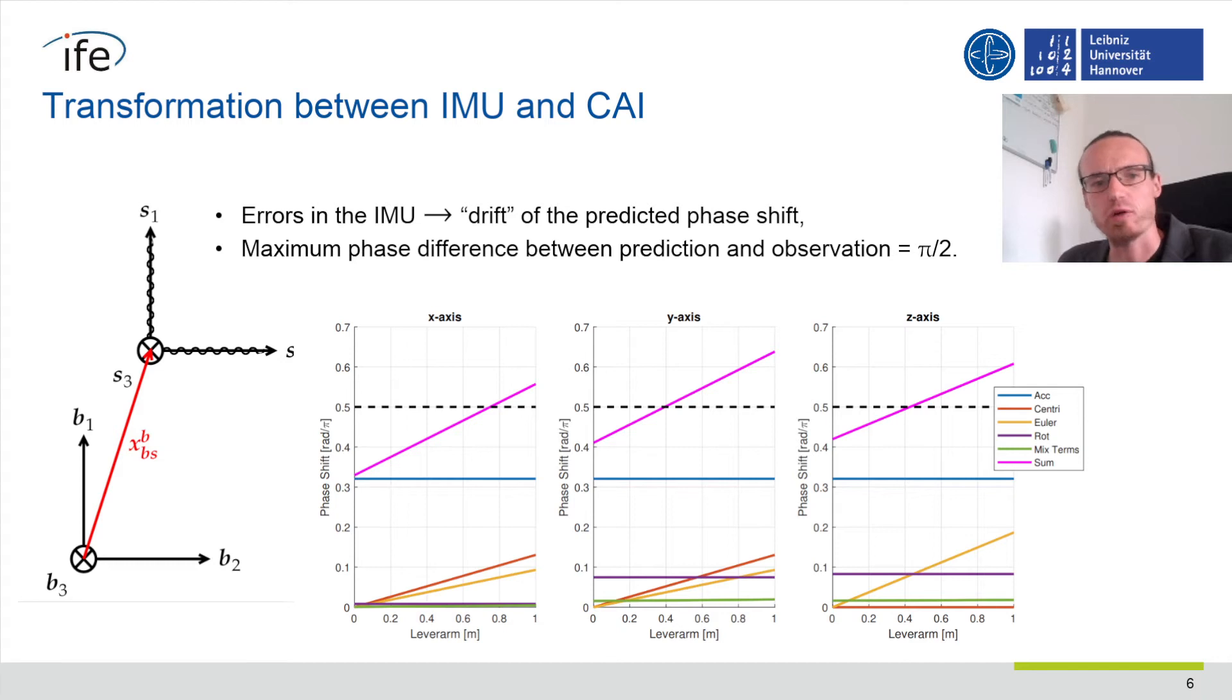We still have to consider that errors in the IMU data lead to wrong predictions. This drift of the phase prediction might still be too large to solve the ambiguity, and this is further magnified by a lever arm between the sensors which leads to fictitious force terms that scale with the distance. This is a trade-off that includes the choice of quality of the conventional sensors and the distance between the systems, for which we give general guidance in the paper.